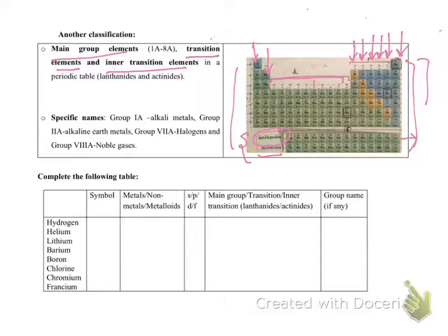Other than that, this Group 1A here, they are also known as alkali metals. Group 2A - alkaline earth metals. Group 7A - fluorine, chlorine, bromine, iodine - they are known as halogens. And the last one, Group 8A, they are known as noble gases.